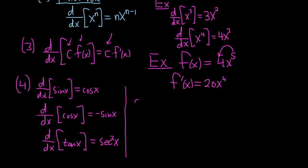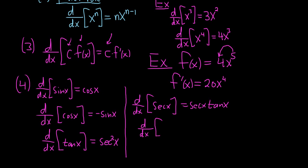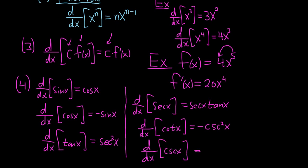Then we have the harder ones. The derivative of secant is secant times tangent. The uncommon ones are for cotangent and cosecant: the derivative of cotangent is negative cosecant squared x, and the derivative of cosecant is negative cosecant cotangent.